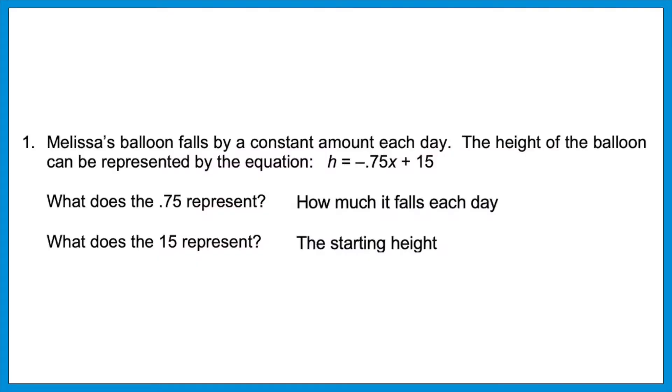They're using the equation of a line to represent a situation. The equation of a line is y equals mx plus b. In that equation the m is the slope and the b is the y-intercept. So what does that mean in context? The negative 0.75 is the slope — that tells you how much the balloon is falling each day. The 15 is the b term, the y-intercept, or where you start on the y-axis — the starting height, where you are when time is zero.